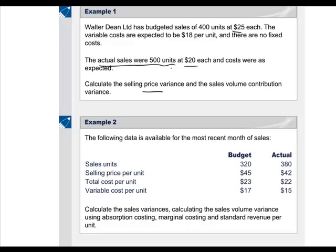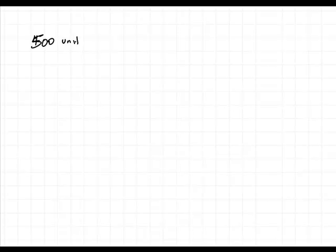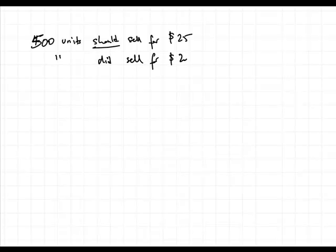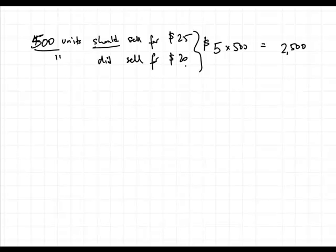Our selling price variance is constructed as follows. The actual 500 units sold should sell for $25 each based on our standard price, but the 500 units did sell for $20. The difference of $5 per item times 500 units gives us a $2,500 variance, and it is adverse because we sold at a lower price than we had budgeted. So our selling price variance is $2,500 adverse.